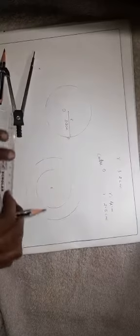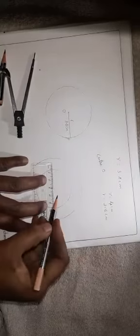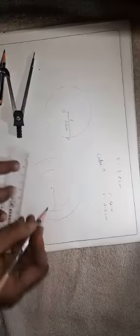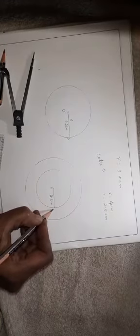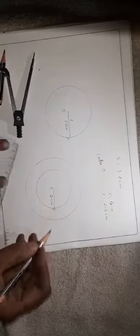So, both the circles have the same center. Then, take a scale from center to first circle. That is 2.5 centimeters. That is one radius.